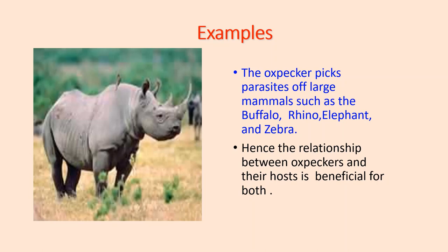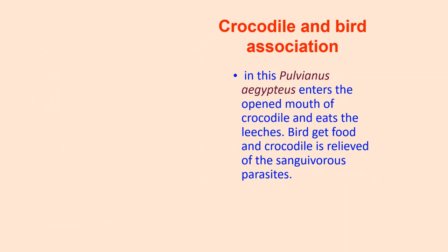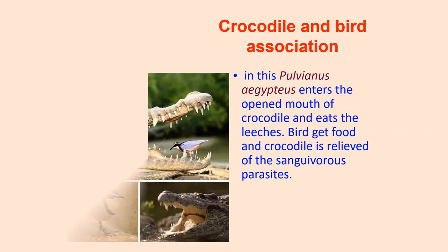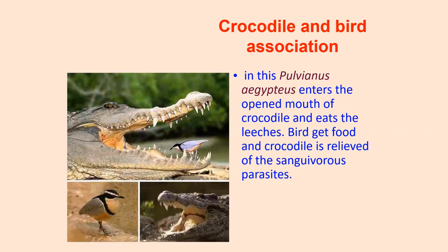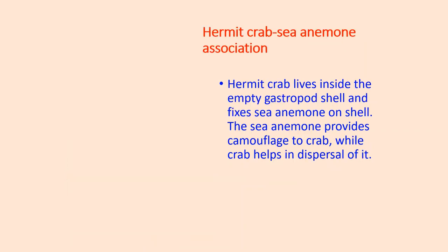Next is the crocodile and bird association. Pluvianus aegyptius enters the open mouth of the crocodile and eats the leeches. The bird gets food and the crocodile is relieved of its sanguivorous parasites.